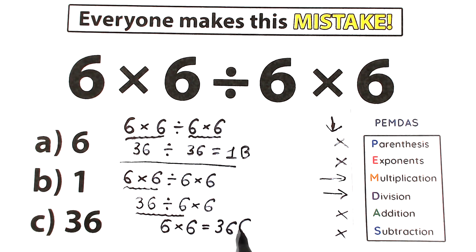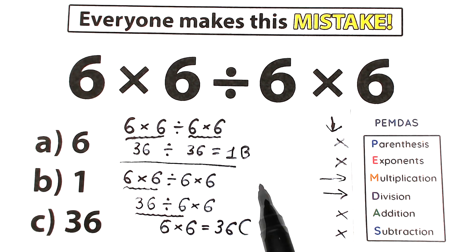Option, option C. And right now the main question, what is the correct answer? Here option B, here option C, 1, 36, what is the correct answer?